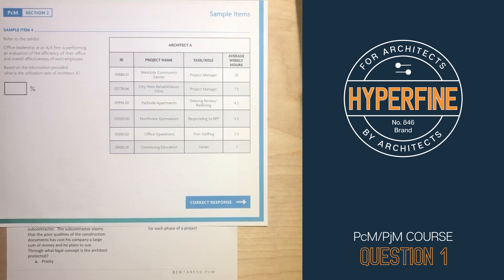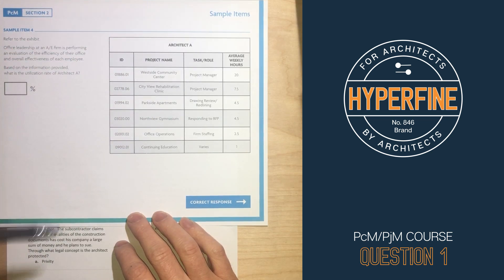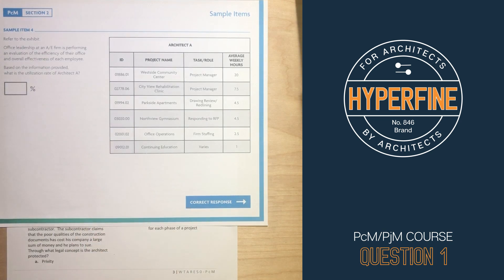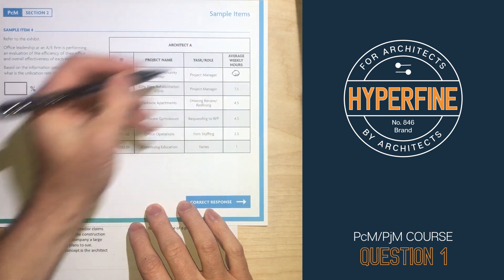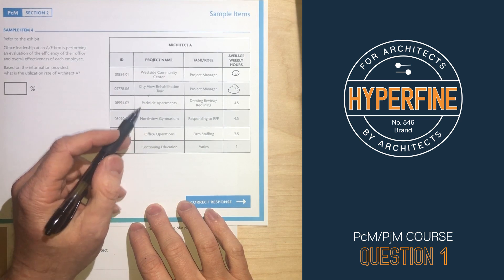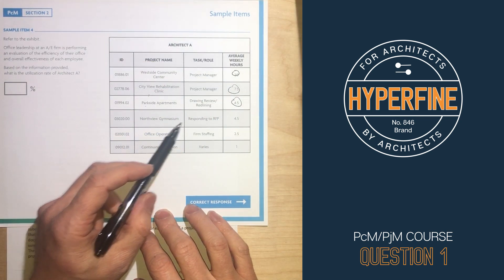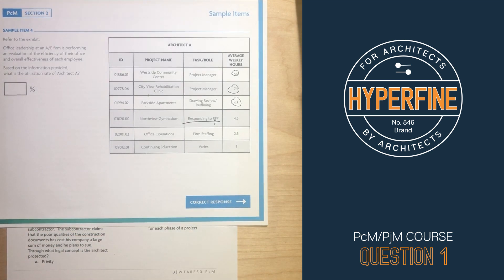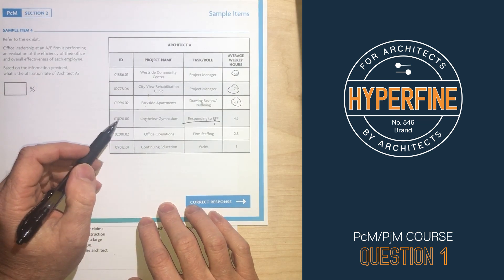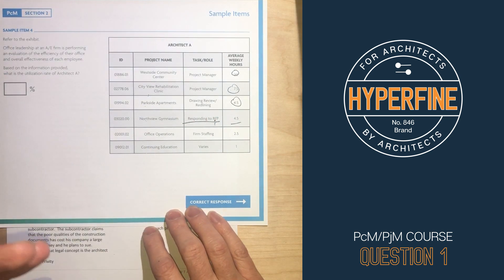Here's one more example from the NCARB handbook, sample item 4 from the PCM section. You're given tasks: Westside Community Center as project manager — yes, that counts. Another project as project manager — yes. Parkside Apartments drawing/reviewing/redlining — yes, that's actual production work. Northview Gymnasium responding to an RFP — this is the trick. RFP means request for proposal; the Architect's Handbook counts this as marketing time. Your firm doesn't have this project — they're trying to get it. So those 4.5 hours do not count as direct labor. Office operations and continuing education also don't count.